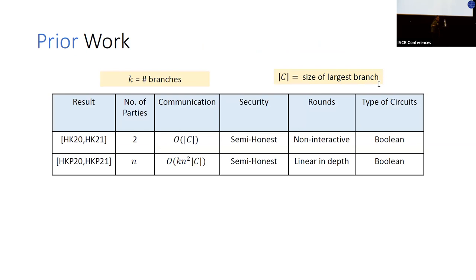Recently, some works have addressed the exact same question we are considering, and have made significant progress. In particular, works by David Heath and Vlad Kolosnikov have shown that two-party protocols for conditional branches can have communication independent of the number of branches. However, in the n-party setting, no such protocol is known. These recent works have managed to reduce the dependence on the number of public key operations, but the total communication still depends linearly on the number of branches.